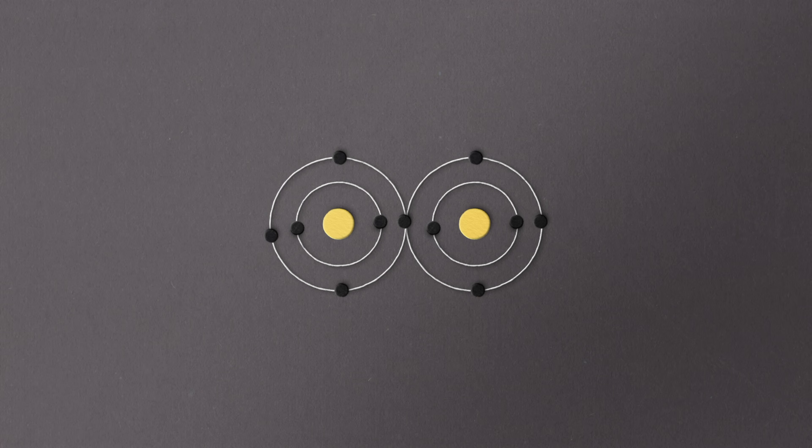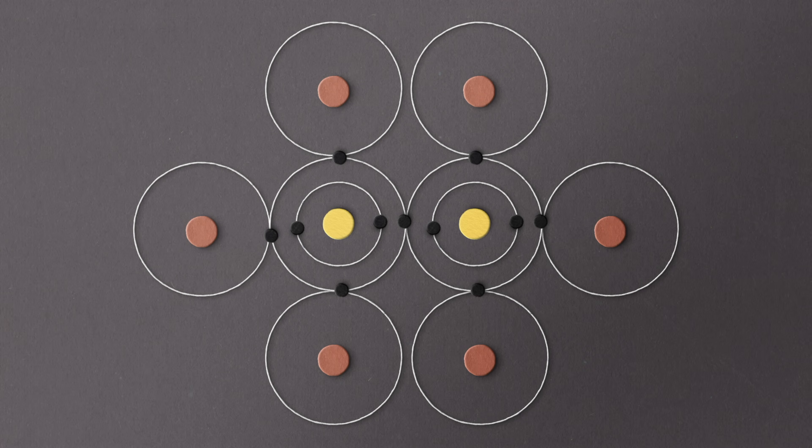Likewise, one atom of carbon can form a bond with another atom of carbon, so two carbon atoms bound together, while those same carbons form bonds with three molecules of hydrogen each, making what we know as the gas ethane.